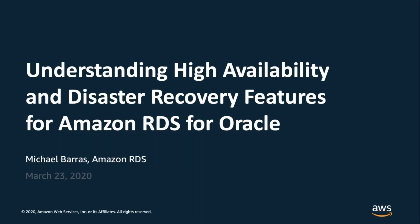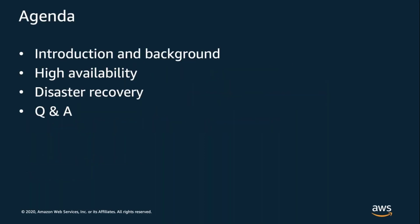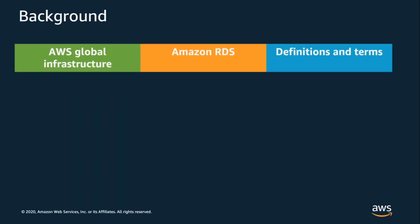My name is Michael Barris and I'm a senior database engineer with the Amazon Relational Database Service. In this talk we're going to take a deep look at high availability and disaster recovery with Amazon RDS for Oracle. Like most Oracle DBAs I've spent many hours configuring servers and storage and struggling to get complex availability architectures working, so much so that the database itself can seem like an afterthought.